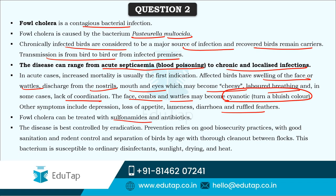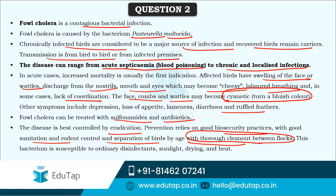Foul cholera is a treatable disease with sulfonamides and antibiotics, but it can best be controlled by eradication through good biosecurity practices — providing good amounts of feed, hygienic maintenance, good sanitation, rodent control, and separation of birds by age. Normal cleanliness, hygiene maintenance, and separation of birds by age can also reduce the incidence of foul cholera.